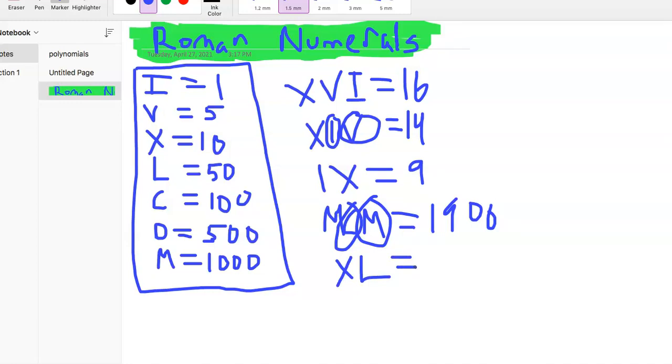We'll do one more: XL. X is 10, L is 50. Once again, we have a smaller number in front of a larger number. If this was LX, then it would just be 50 plus 10 equals 60. But in the case of XL, X is 10, L is 50, so we subtract: 50 minus 10 is 40.